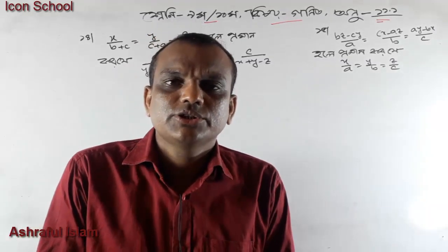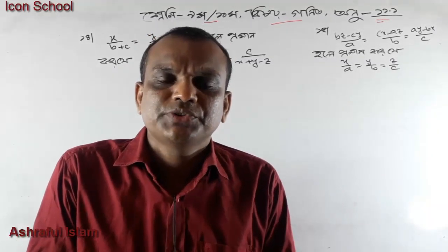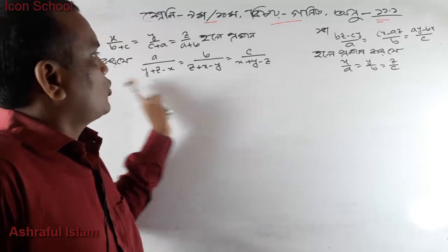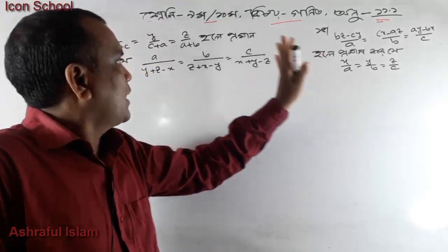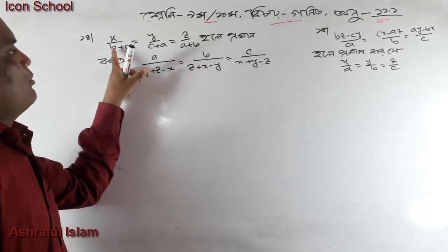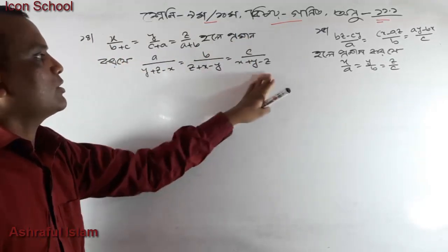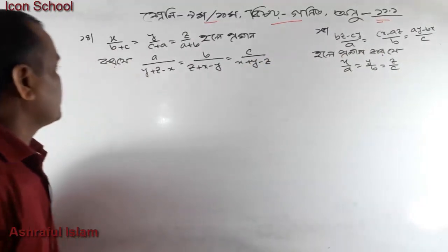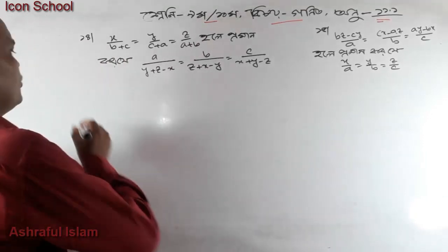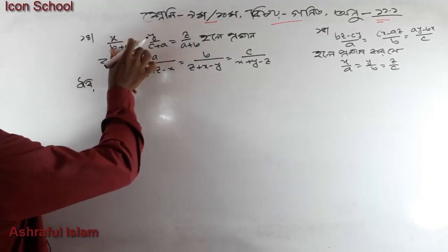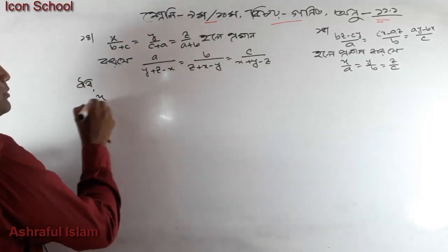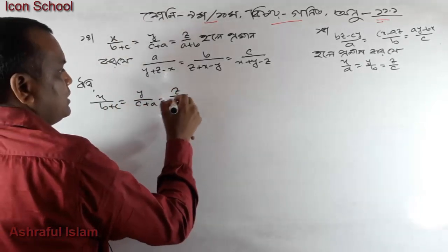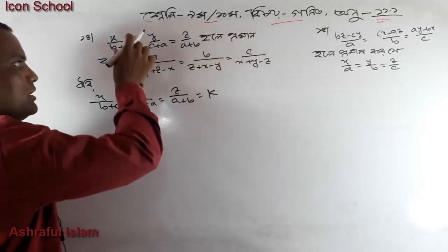How did you know the Ikona school? We started on this problem. Now let's take a look at the same thing: x by b plus c, y by c plus a, z by a plus b — which is the same thing?